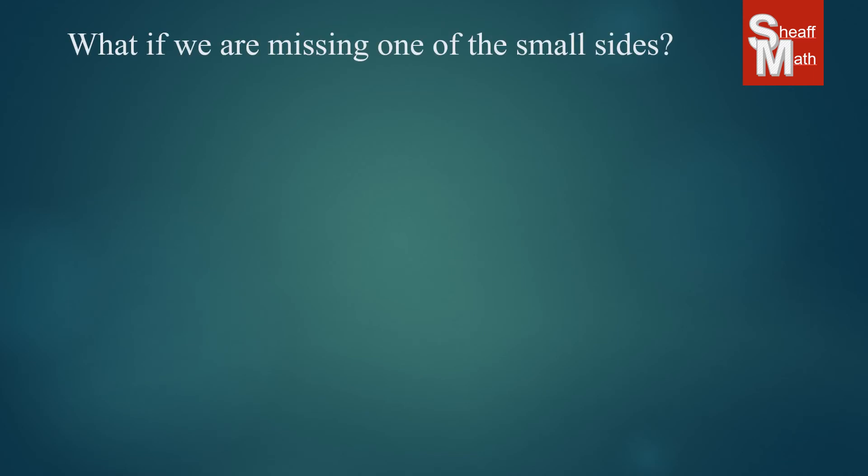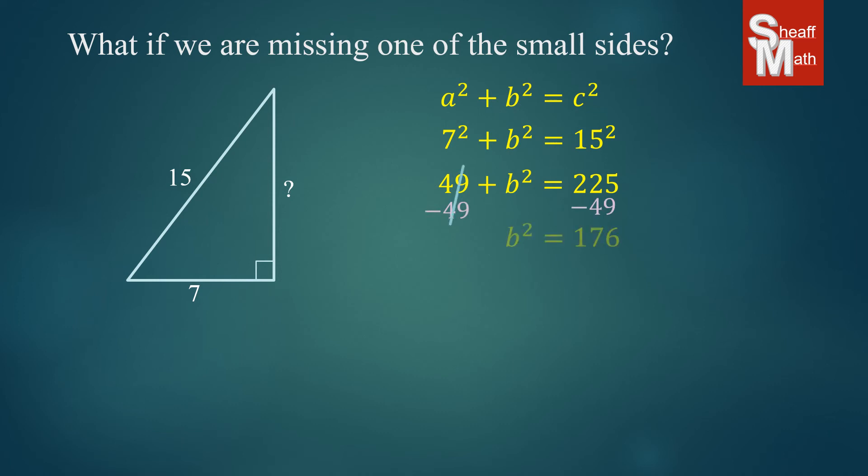Now, what if we're missing one of the small sides? So here's an example. We have 7, and then the question mark is the other leg, and then the 15 is the hypotenuse. So now we're missing one of the sides. And so what we're going to do is we're going to put the numbers that we know of into the formula. So we'll put 7 in for A, B is unknown, and 15 for C. And so now we're going to simplify and solve for B. So we get 49. And then we subtract 49 on both sides. So we get B squared equals 176.